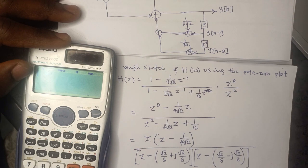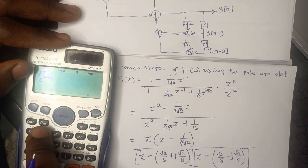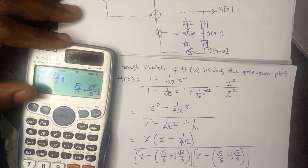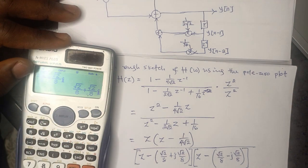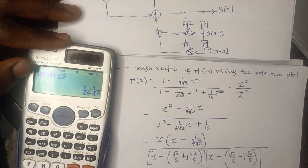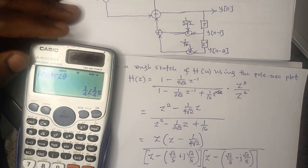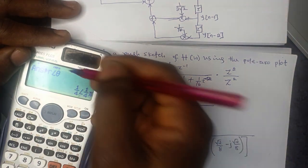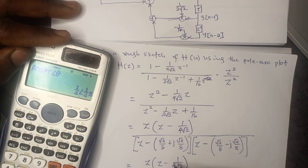Next, we convert these roots to magnitude-angle form. We go back to the calculator, go to Mode, select Complex (2), enter the expression √2/8 + j√2/8, then press Shift, Complex number 3 to convert to magnitude-angle form. The result is 1/(4√2) at angle π/4 radians, giving us Z − (1/4)e^(jπ/4) as one factor of the denominator.